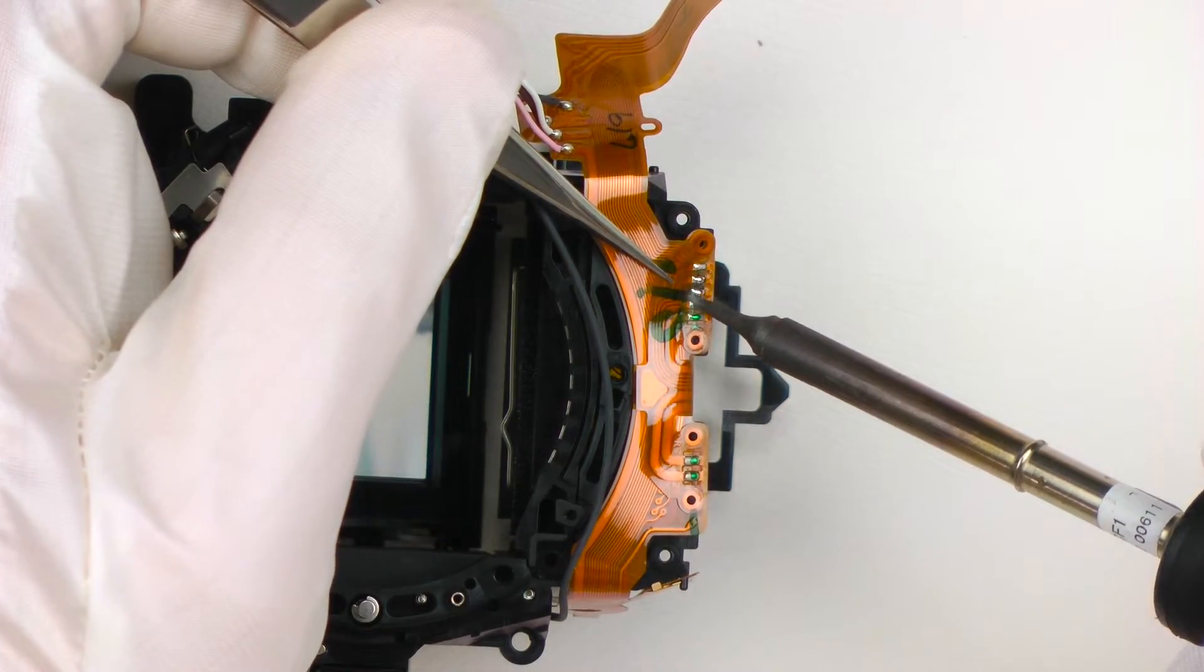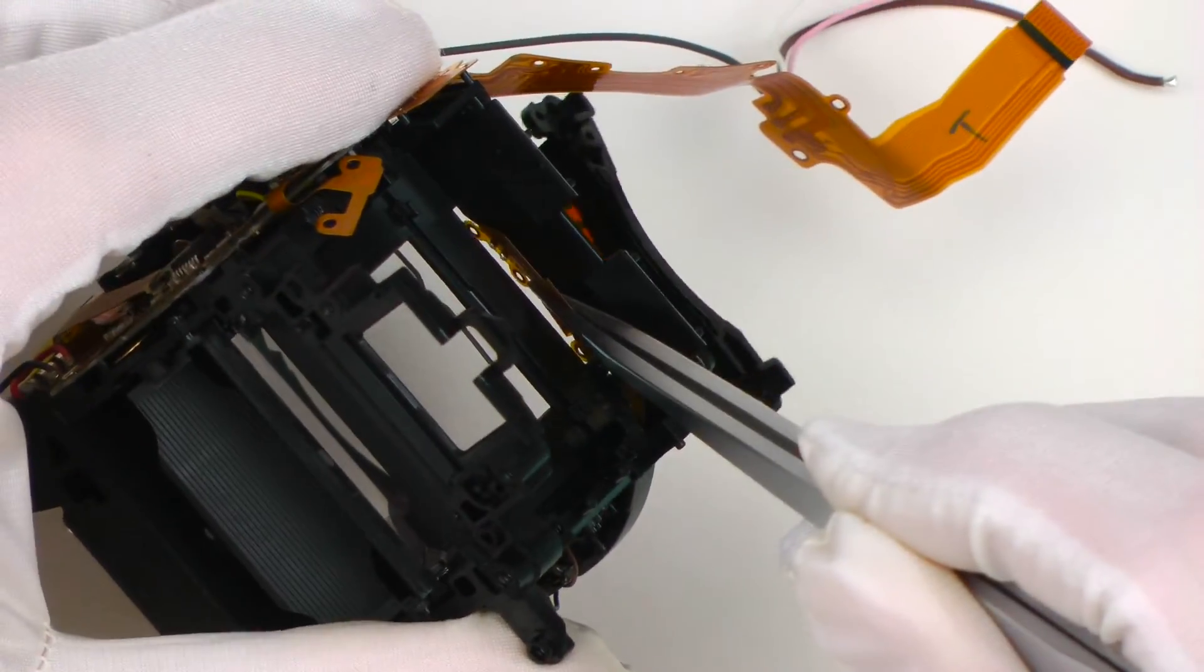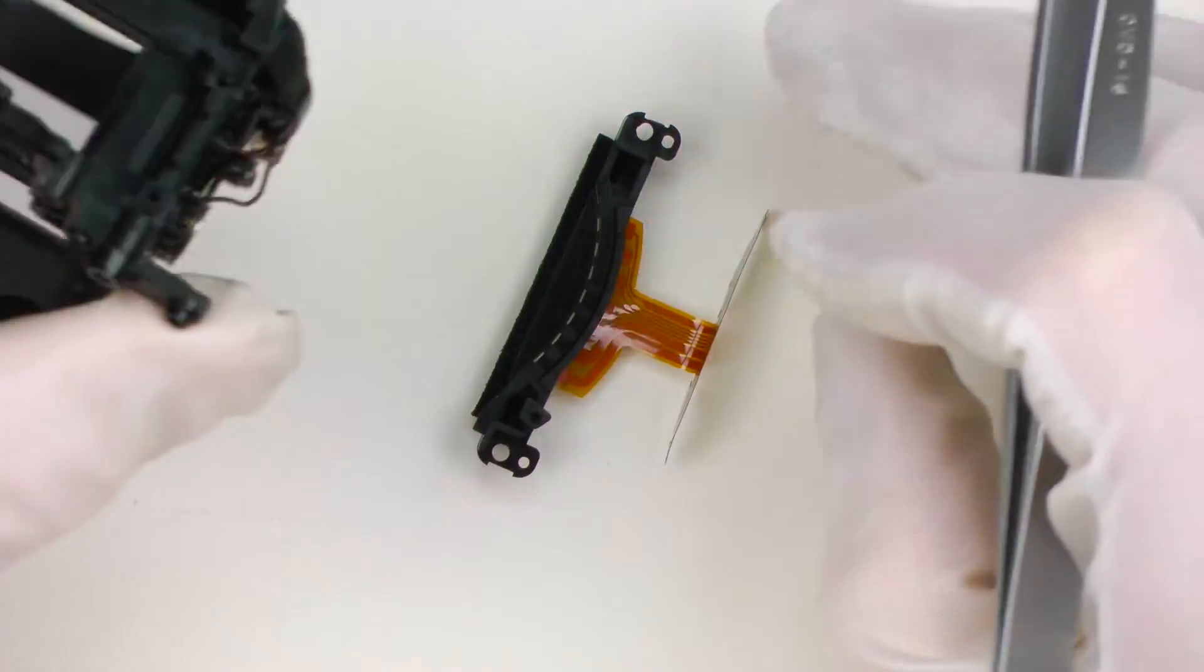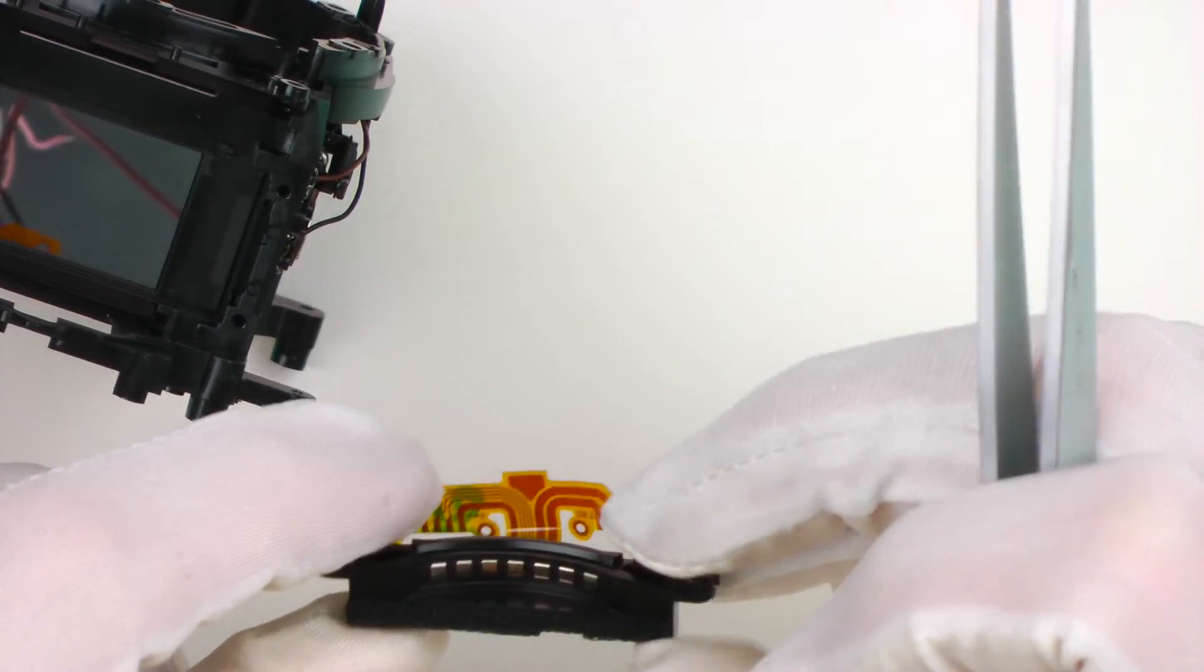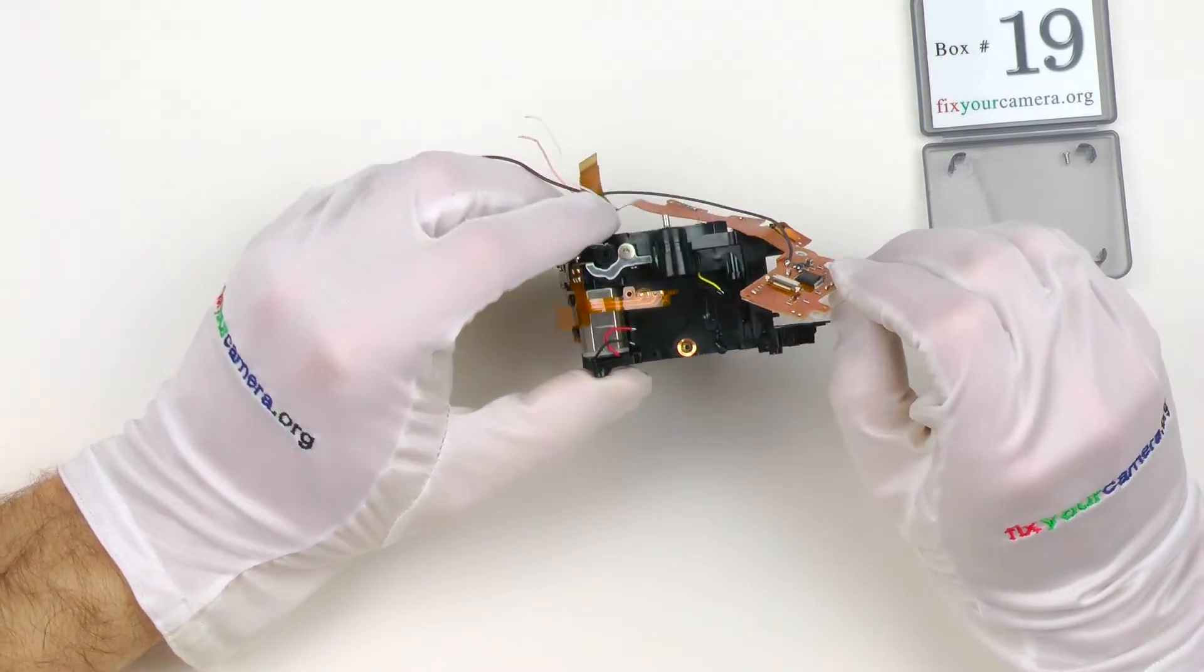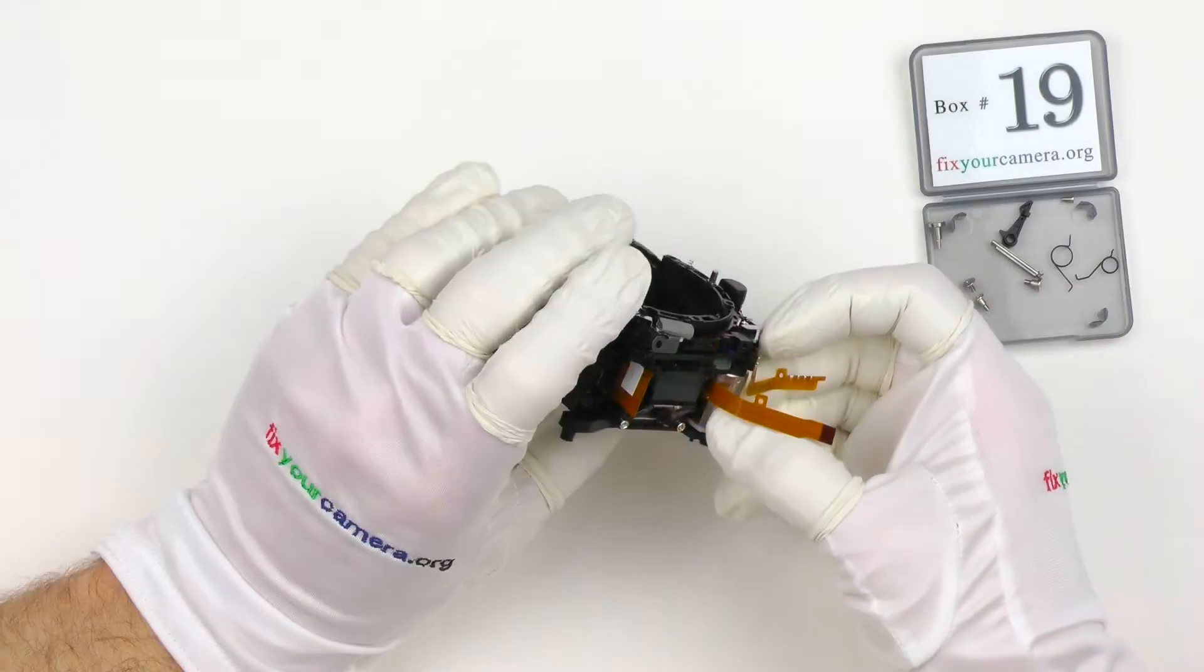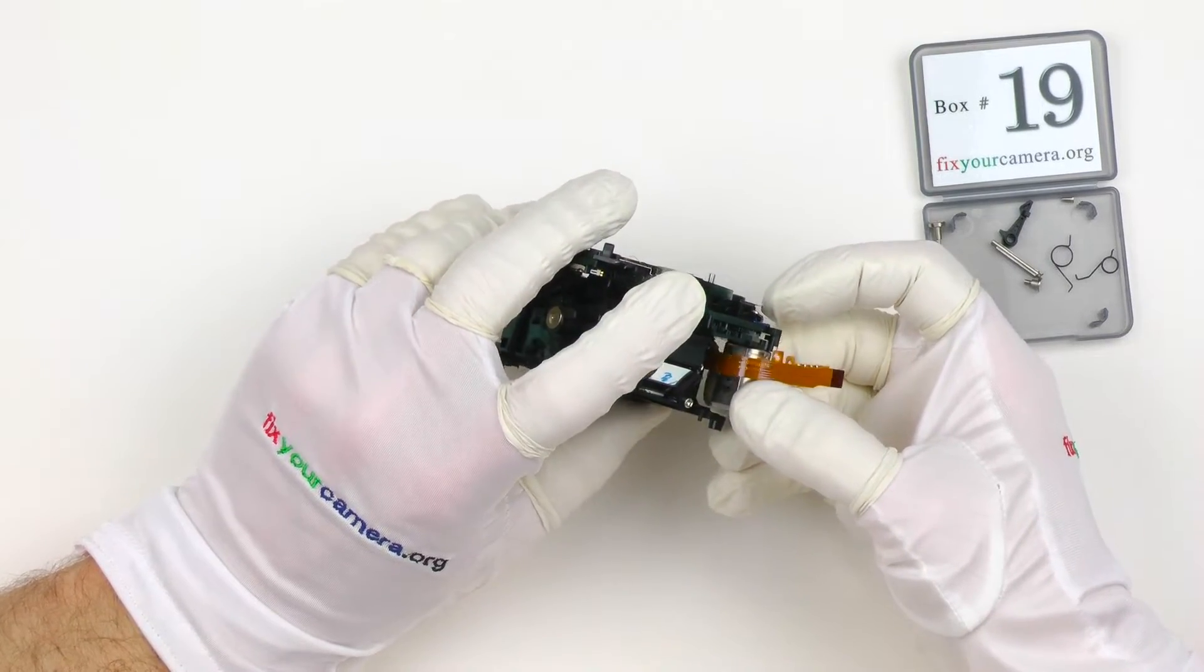Lens contacts assembly. I have to desolder some connections here and very gently take it out, being careful not to tear or destroy this flex cable. The main flex board with a motor driver on it. This one is for the focus motor. Some springs and some other parts. And the autofocus motor is out.